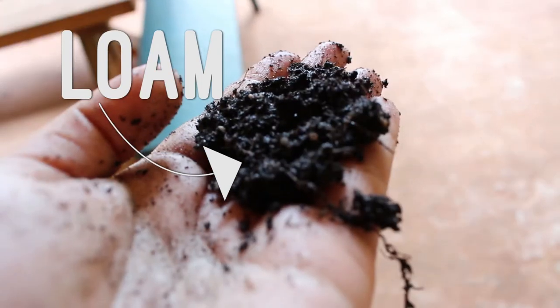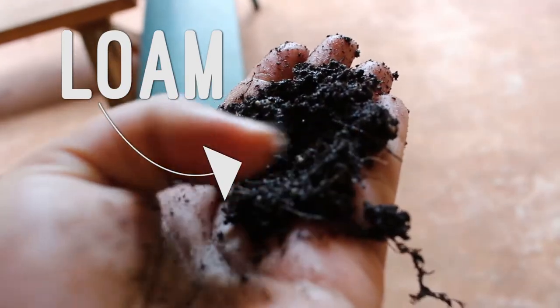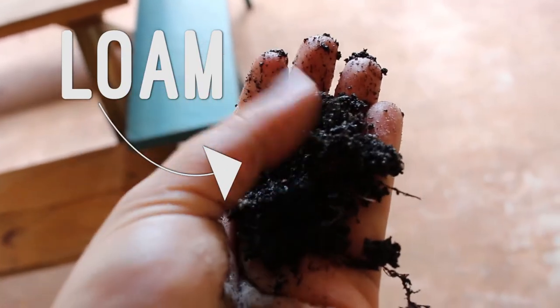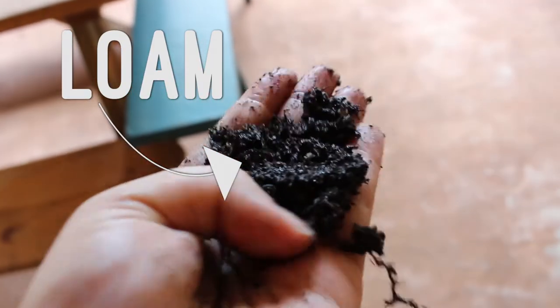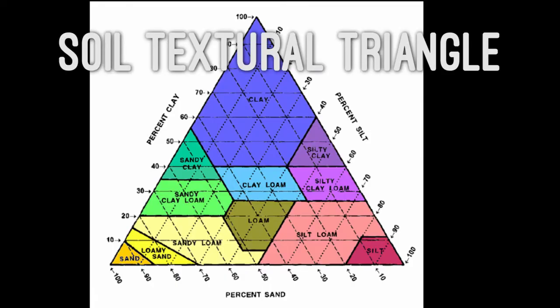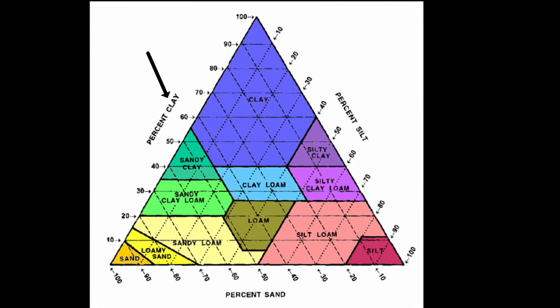Sand, silt, and clay refer to particle size. Sand has the biggest particle size, clay has the smallest, and silt is somewhere in the middle. Loam, which is what most people picture when they hear the word soil, is a specific combination of the three. And how do we figure out this combination? Ta-da! The soil textural triangle. If you know the percentage of clay, silt, and sand in a particular sample of soil, you can figure out the name of its soil texture.